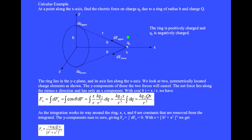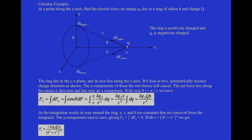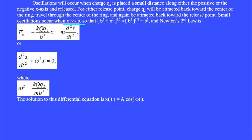If charge Q2 is located off axis, then R and theta are not constant, the law of cosines must be used, and the solution is written in terms of an elliptic integral. Oscillations occur when Q2 is placed a small distance along the positive or negative x axis and released. For small oscillations where x is much less than B, B squared plus x squared to the three-halves power approaches B cubed, and Newton's second law gives d²x/dt² plus omega squared x equals 0, where omega squared equals k big Q Q2 over m B cubed. The solution is x of t equals A cosine omega t.